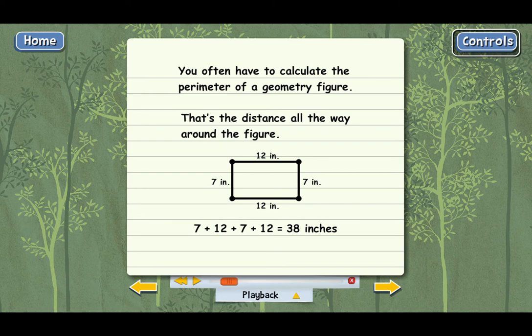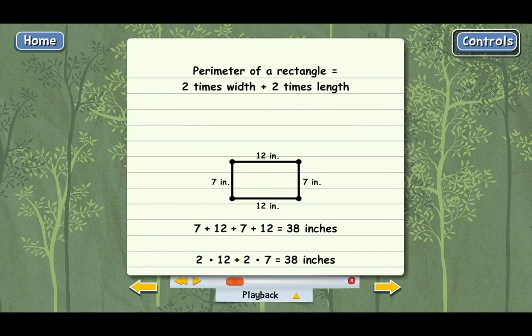Now, since the opposite sides of a rectangle are always equal to each other, another way to calculate the perimeter is to just use multiplication. We could have done 2 times 12 plus 2 times 7. And the answer would have come out the same, obviously. In general, the perimeter of any rectangle equals 2 times the length plus 2 times the width.